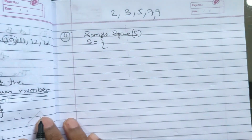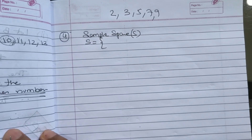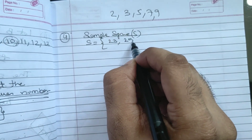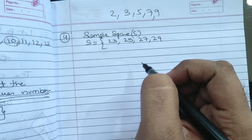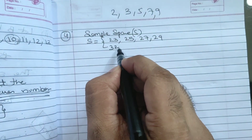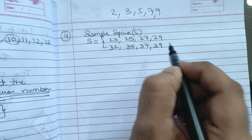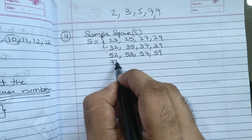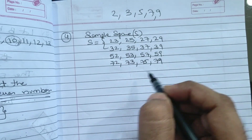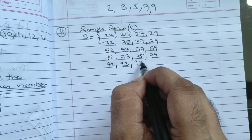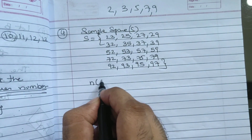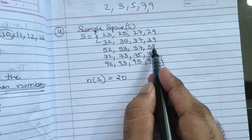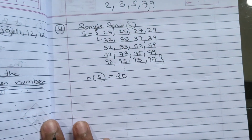We have to list all two-digit numbers. Starting with 2: 23, 25, 27, 29. Starting with 3: 32, 35, 37, 39. Starting with 5: 52, 53, 57, 59. Starting with 7 and 9 similarly — each digit gives 4 numbers. So 5 × 4 = 20. Number of elements in sample space is 20.